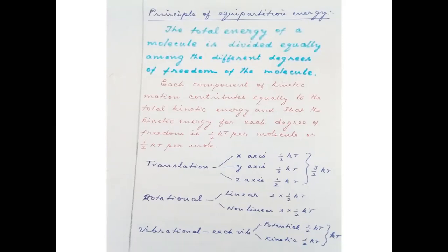The statement of the Principle of Equipartition of Energy is: the total energy of a molecule is divided equally among the different degrees of freedom of the molecule. In previous classes we have already seen what degrees of freedom are. Gaseous molecules are not stationary — they are in a continuous state of motion; they move, rotate, and vibrate.